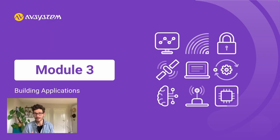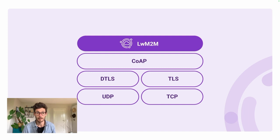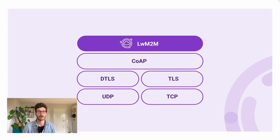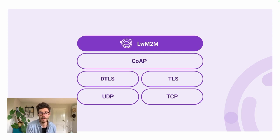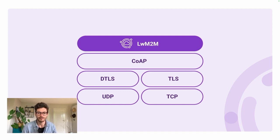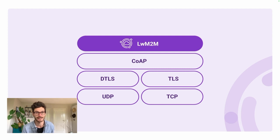Let's start with deconstructing the protocols underneath the Lightweight M2M standard. If we break down the Lightweight M2M protocol, we see that it runs on top of a protocol called CoAP, or Constrained Application Protocol. CoAP runs on top of UDP by default, or TCP when more reliability is required. Both UDP and TCP come with corresponding security layers — DTLS and TLS respectively.